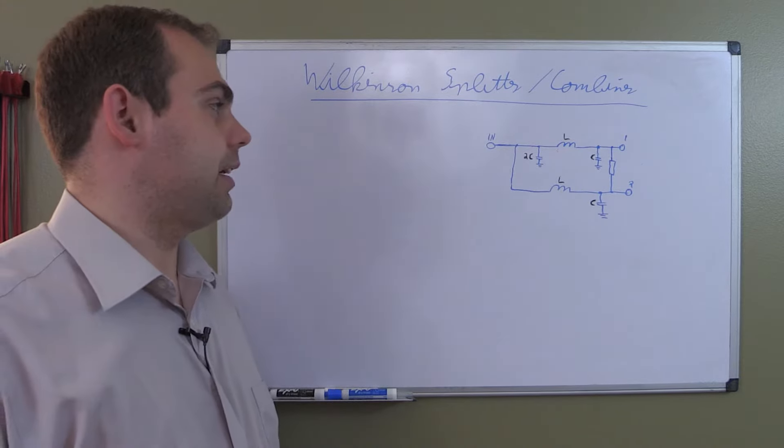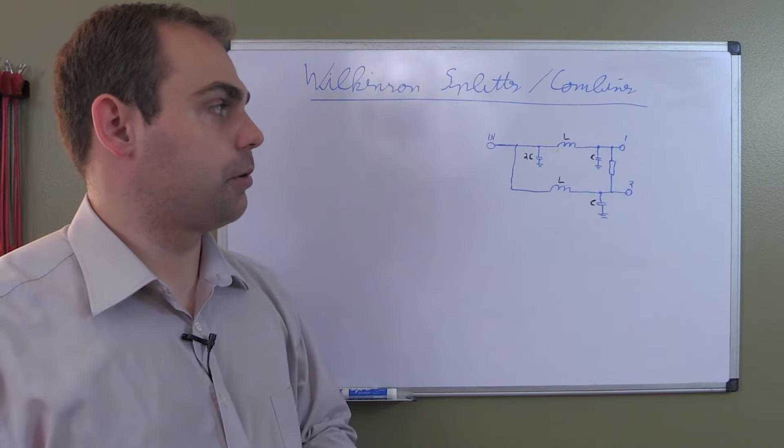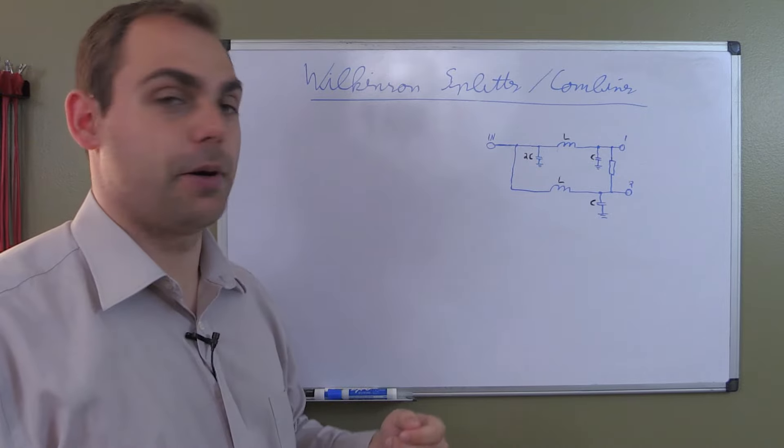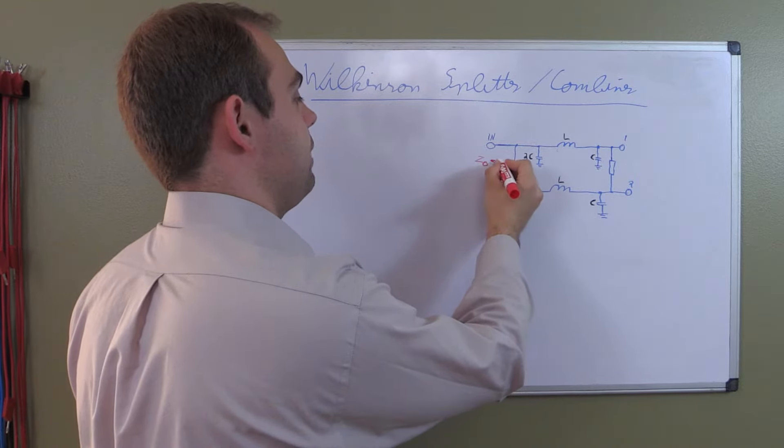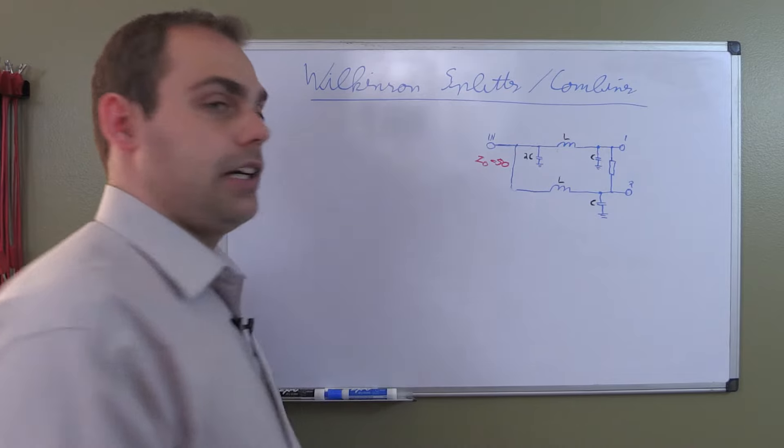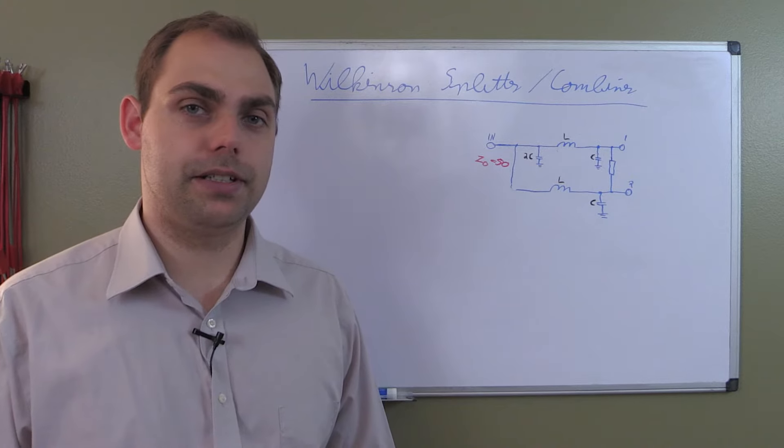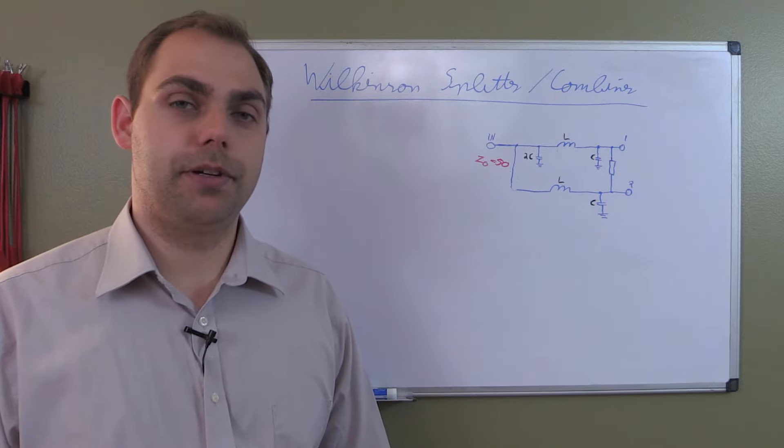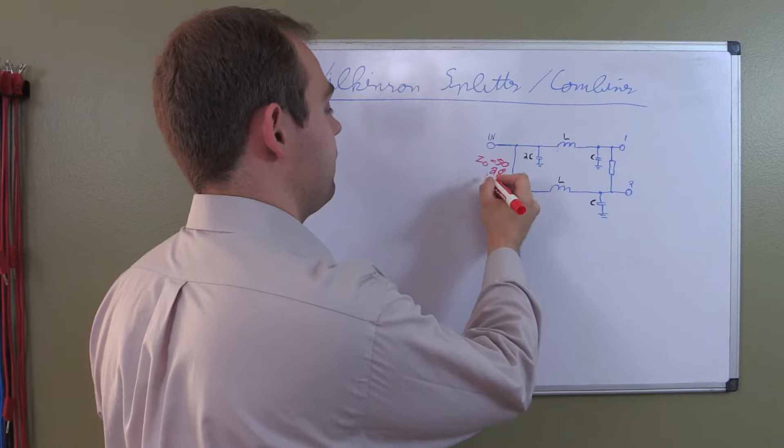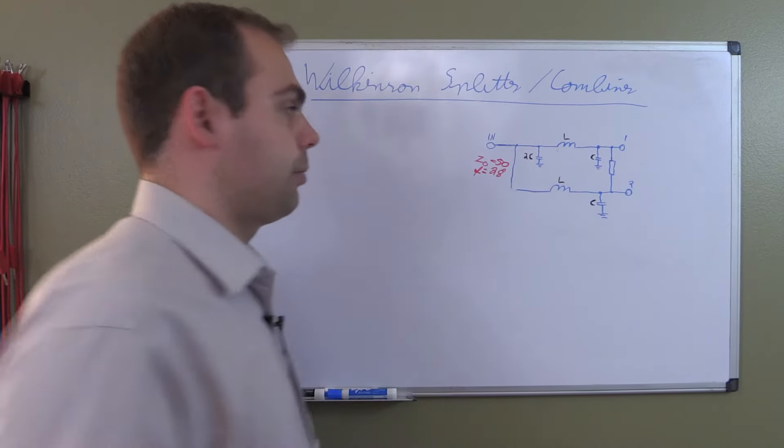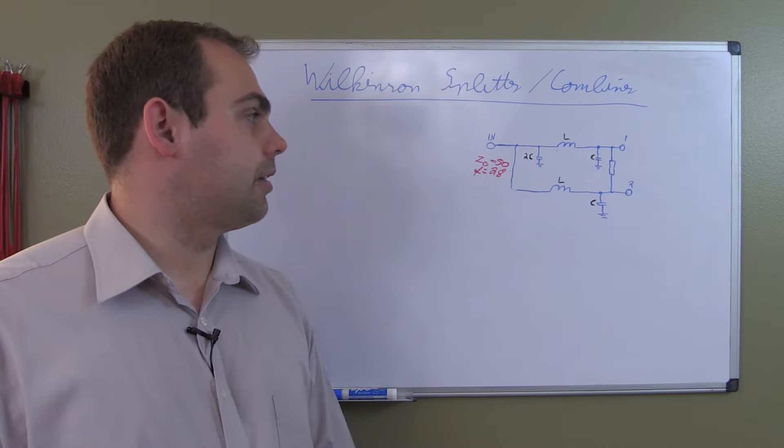At first, we need to define a couple of parameters. Number one, we want an equal split Wilkinson with two output ports or input ports. The Wilkinson works both as splitter and combiner. We want our input and output impedance, which we call Z0, to be 50 ohms. Since the pi filters here are supposed to act as a quarter wave equivalent, we need a frequency. The frequency we're going to define here is 28 megahertz. That's supposed to be our center frequency and our input and output impedance.